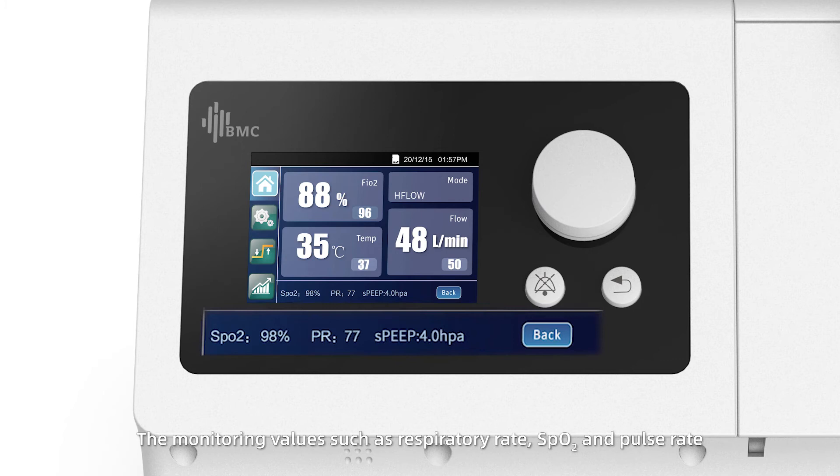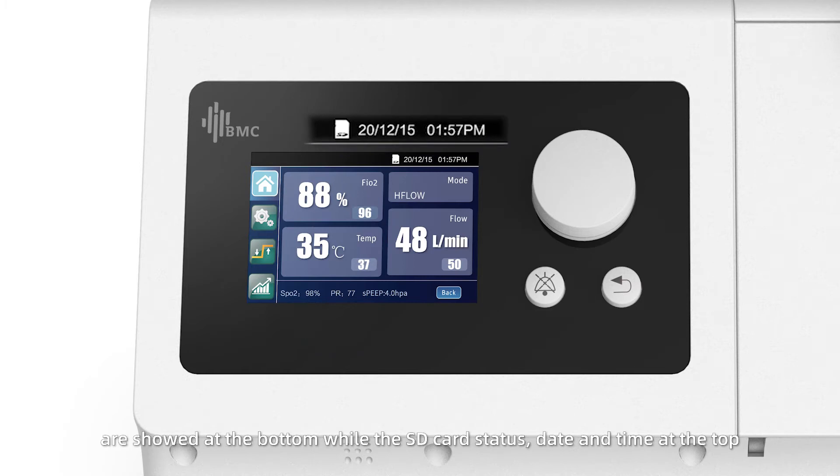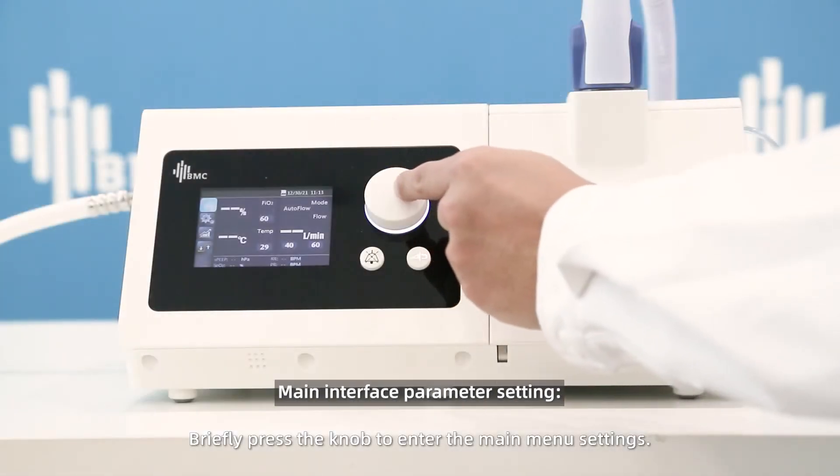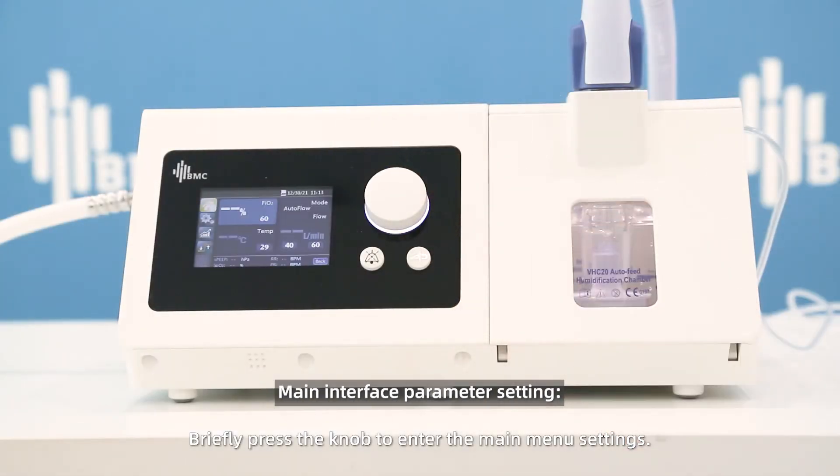The monitoring values such as respiratory rate, SpO2, and pulse rate are shown at the bottom, while the SD card status, date, and time are at the top. Briefly press the knob to enter the main menu setting.